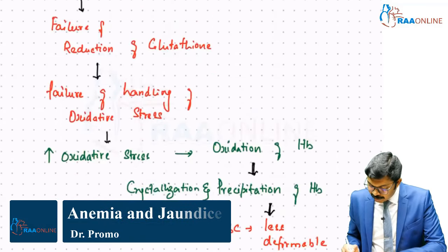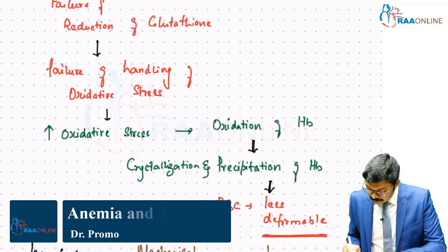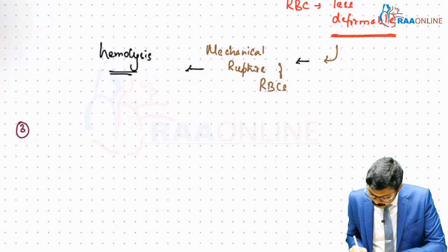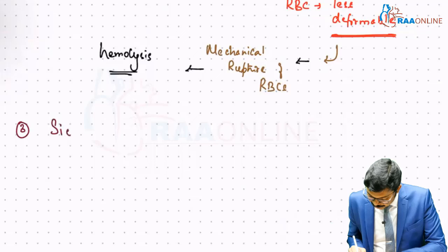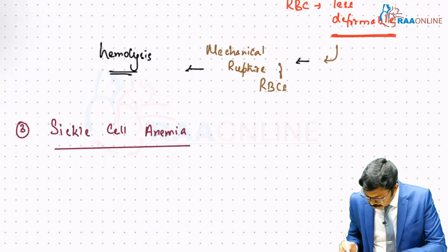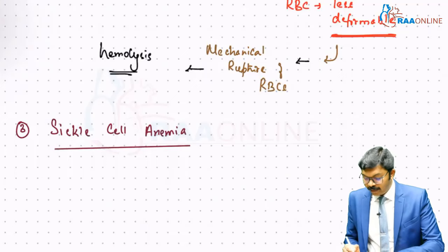And the last variety in hemolytic anemia is going to be number three: sickle cell anemia.